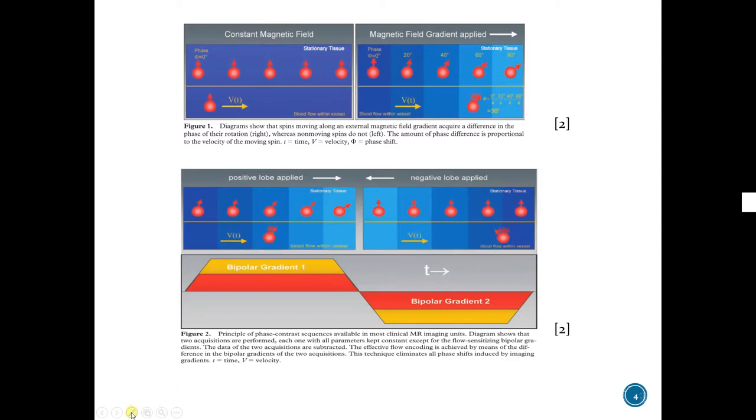So what happens here? Under constant magnetic fields, stationary spins and moving spins have no phase. When magnetic gradient is applied, moving spins and stationary spins acquire phase. In the second figure, bipolar gradients are applied, which I will explain later. After bipolar gradients are applied, stationary spins have no net phase. However, moving spins will have phase shift. The amount of phase shift is proportional to the velocity of the moving spins.